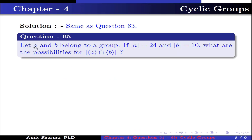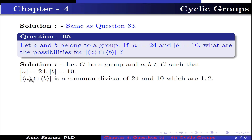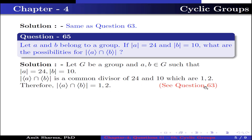Question number 65: Let A and B belong to a group. If the order of A is 24 and the order of B is 10, what are the possibilities for the order of ⟨A⟩ ∩ ⟨B⟩? Let G be a group with A, B ∈ G such that order of A is 24 and order of B is 10. The order of ⟨A⟩ ∩ ⟨B⟩ must be a common divisor of 24 and 10, which gives 1 and 2. Therefore, the order of ⟨A⟩ ∩ ⟨B⟩ is 1 or 2. For more detail, see question number 63.